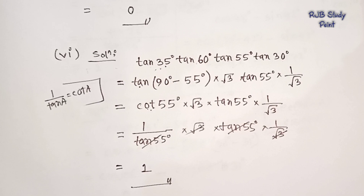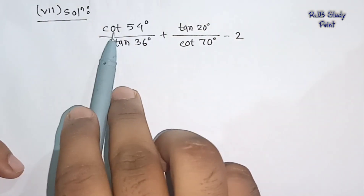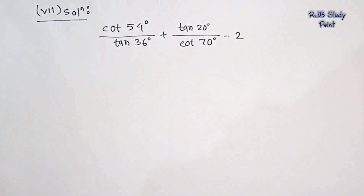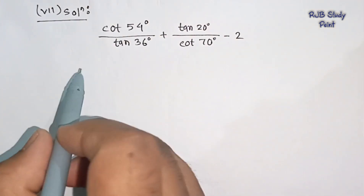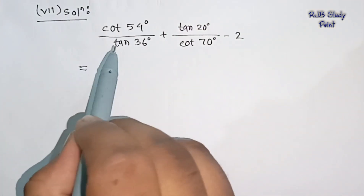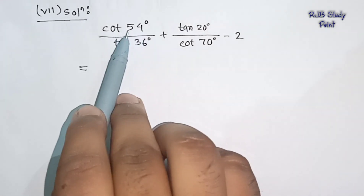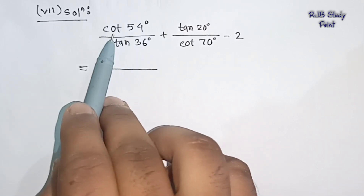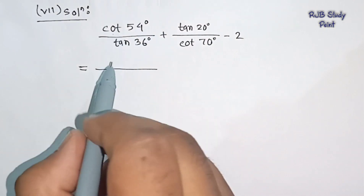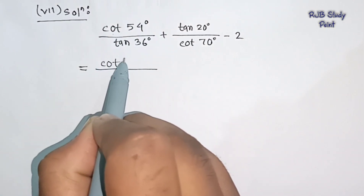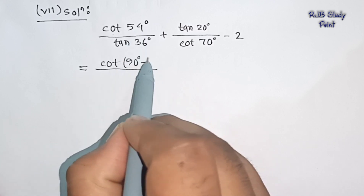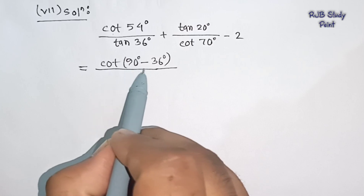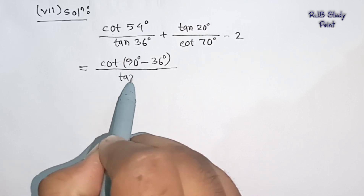Now I will explain question number 7. The question is: cot 54 degree divided by tan 36 degree, plus tan 20 degree divided by cot 70 degree, minus 2. We use the identity cot 54 degree equals tan(90 minus 54) which is tan 36 degree. And 90 degree minus 36 degree gives the same tan 36 degree on the right side.